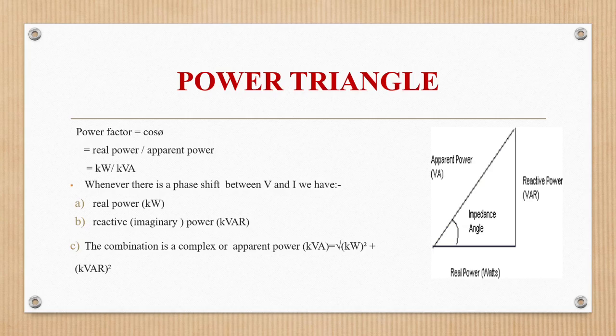The power triangle contains real power, reactive power, and apparent power. Real power units are watts, reactive power units are volt-ampere reactive (VAR), and apparent power units are volt-ampere. Real power is represented by P, reactive power by Q, and apparent power by S. The combination of real power and reactive power gives apparent power: kVA = √(kW² + kVAR²).